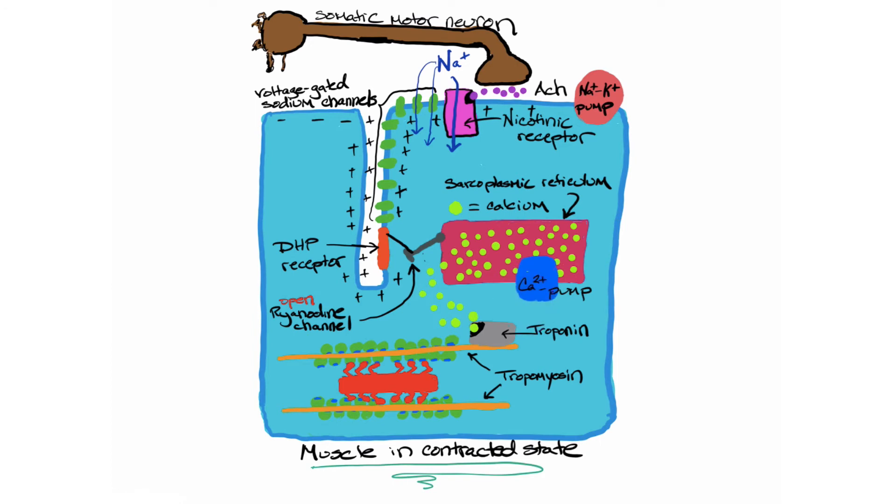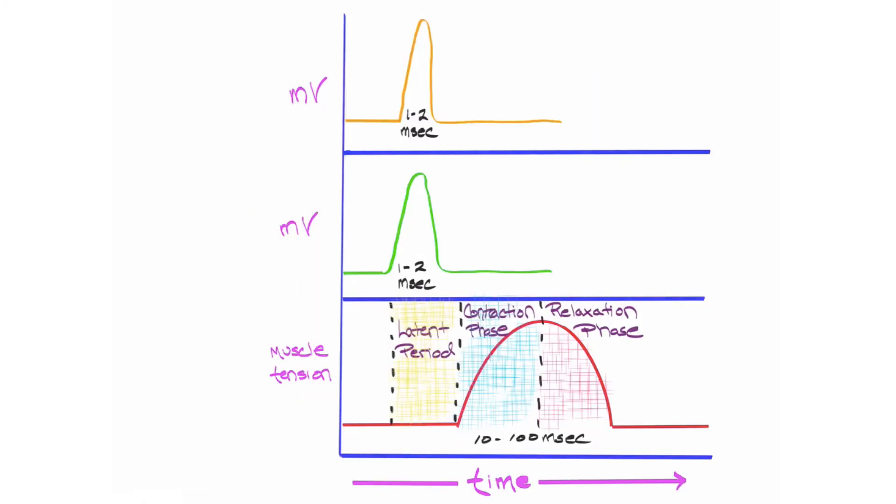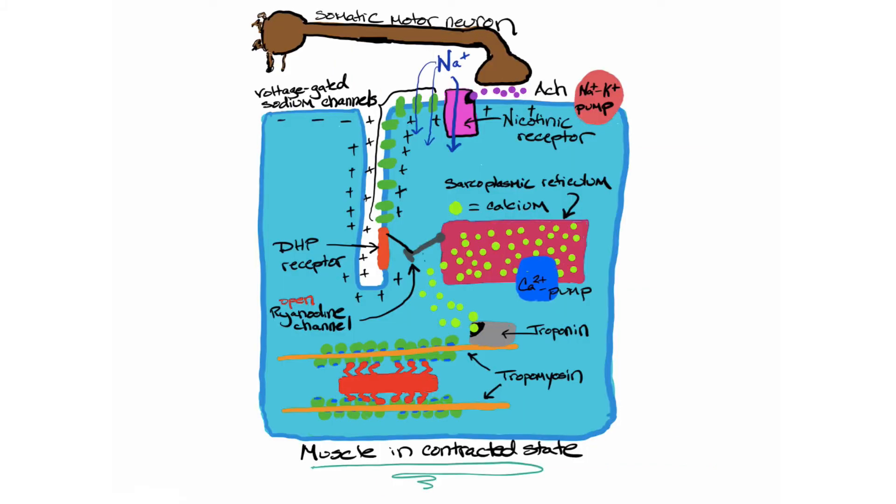Calcium must move down its gradients, bind to troponin. Troponin needs to move tropomyosin, myosin head needs to grab the thin filaments, and then we get the sliding of the filaments, which is muscle contraction. Ultimately there's just a lot of steps that need to occur between the initial excitation and the actual mechanical event, the movements of the muscle fiber.